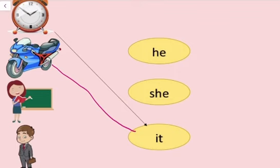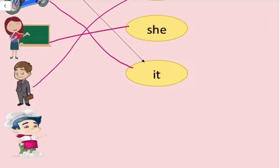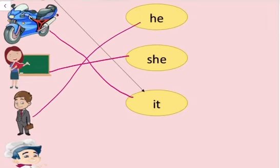Then, teacher. Teacher hai, a girl. Us ke liye hum she use karenge. Then, a man hai. Man ke liye hum he use karenge. Then, a chef hai. Vo bhi boy hai. Us ke liye hum he use karenge.